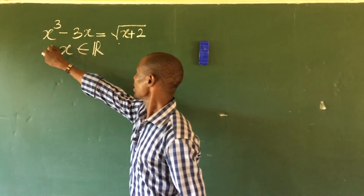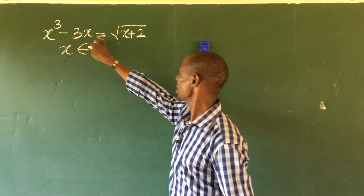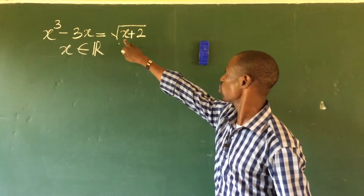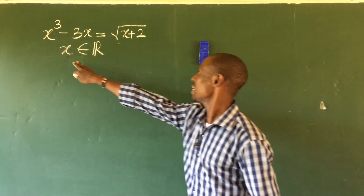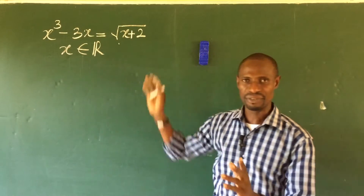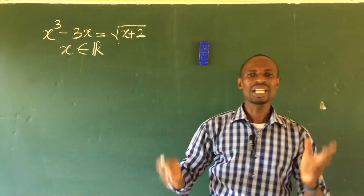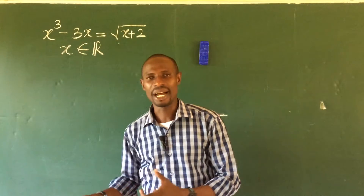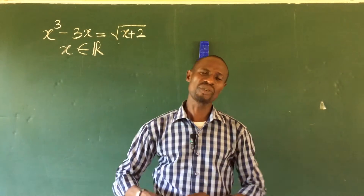The question reads: x to the power of three minus three x equals the square root of x plus two. x belongs to a set of three numbers. So how do we solve this olympiad challenge?